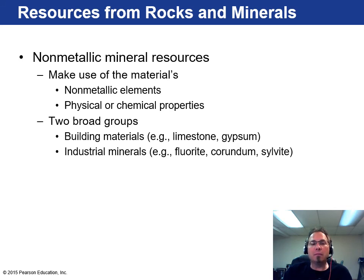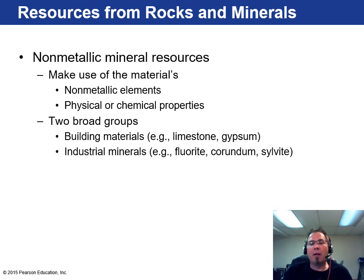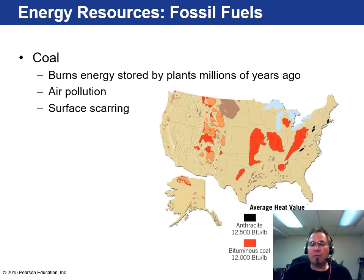There are non-metallic resources like building materials — limestone and gypsum used in concrete — and industrial minerals like fluorite and corundum, which is used as an abrasive. Corundum was number nine on the Mohs hardness scale from last chapter — the second hardest mineral besides diamond, but diamonds are very rare and expensive. Coal is both a rock formed from plant life buried and compressed and also an energy resource. There are different forms of coal — the best being anthracite, and then bituminous coal. Major coal-bearing regions have been mined for years, especially in West Virginia, though coal causes air pollution and surface scarring from mountaintop removal.